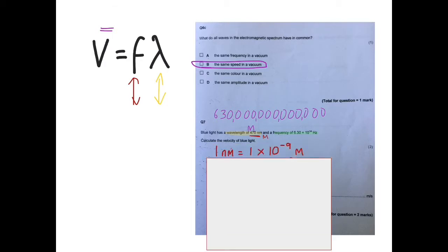Step one is converting this into meters. So one nanometer is 1 times 10 to the minus 9 meters. What that means is it's a very small value. So imagine if a decimal point was here, it'd have to shift back nine positions. But it stands to reason if 1 nanometer equals 1 times 10 to the minus 9 meters, then 470 nanometers equals 470 times 10 to the minus 9 meters.